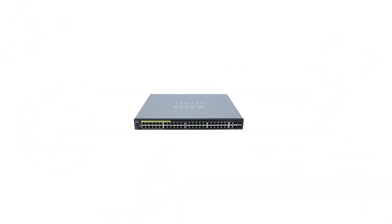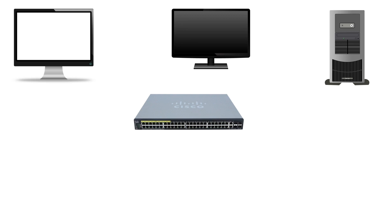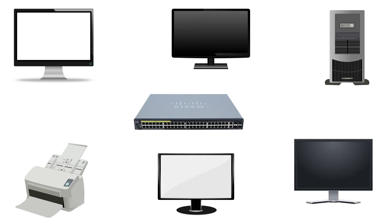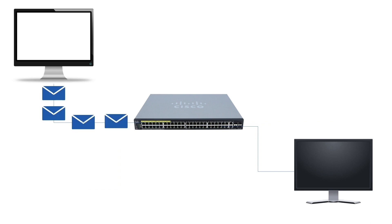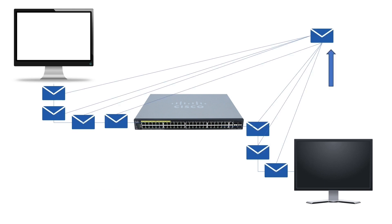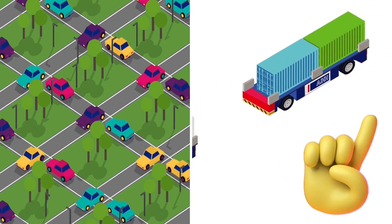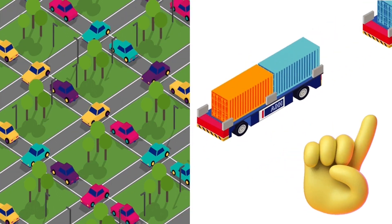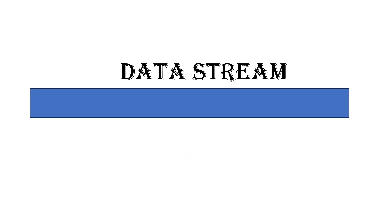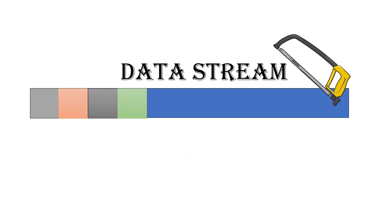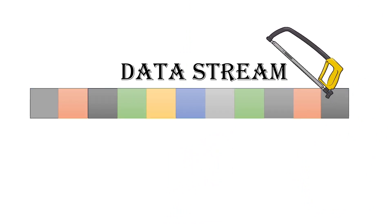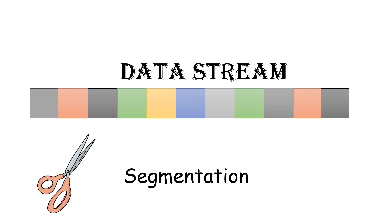An Ethernet switch is a centralized networking device. It works in the middle of the network and connects end devices to the network. End devices use frames to communicate. A frame is a small piece of the data stream that two end devices exchange. Due to network bandwidth and many other factors, a device cannot send the entire data stream at once. It has to break the data stream into many small pieces. The process of breaking a data stream into smaller pieces is called segmentation.